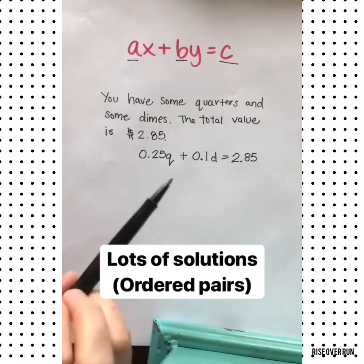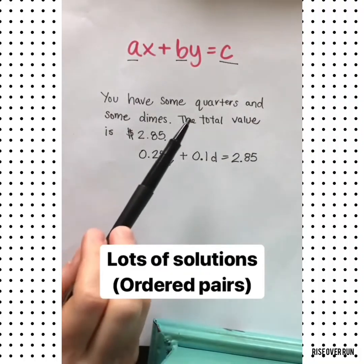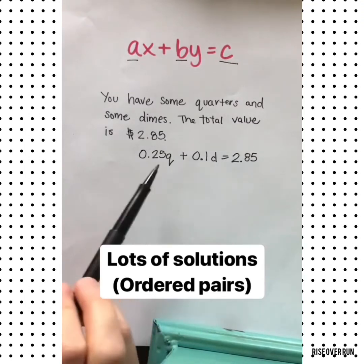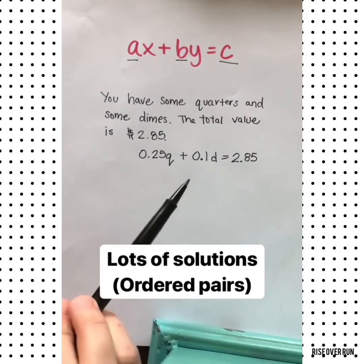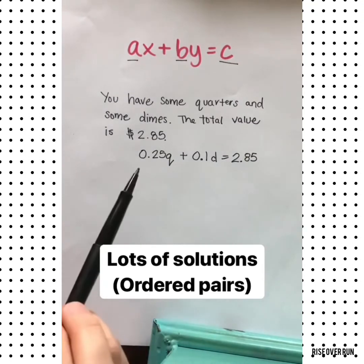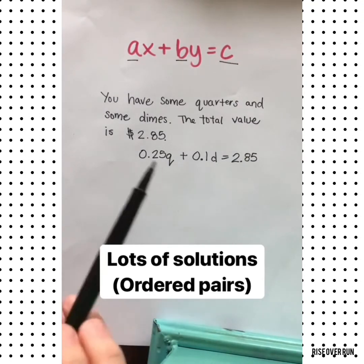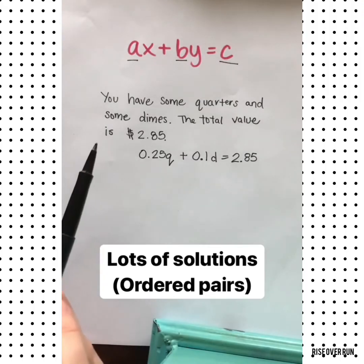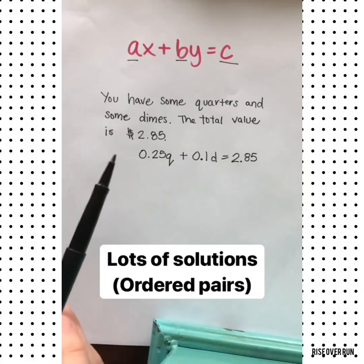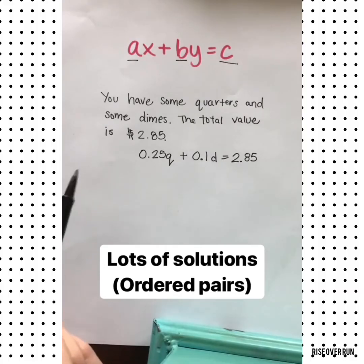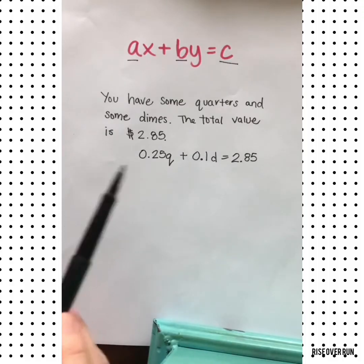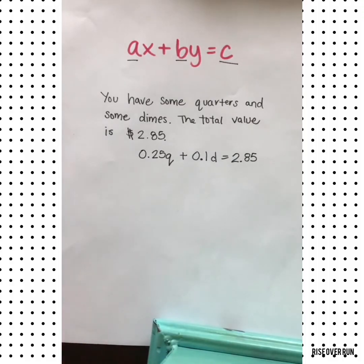It's important to know that there's not only one right answer for q and d here — there are lots of combinations that would work. Just like when we graphed yesterday, lots of values work in the equation. That's why we graph a line for these, so we can see all the values on the graph.